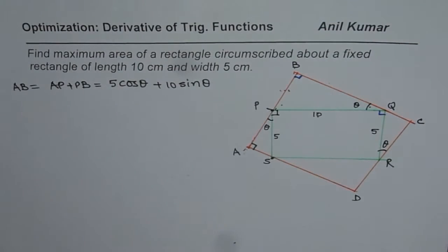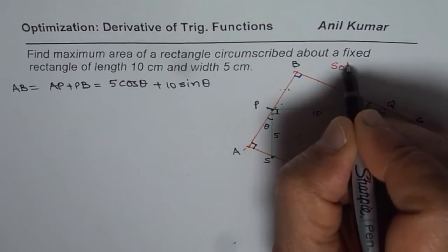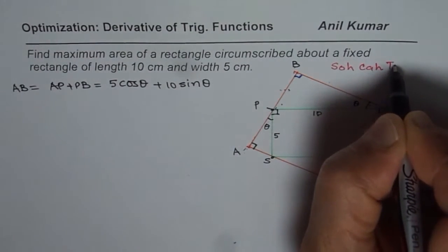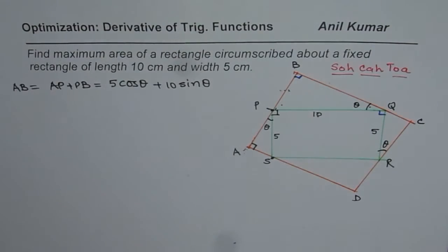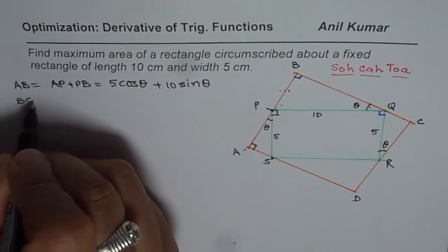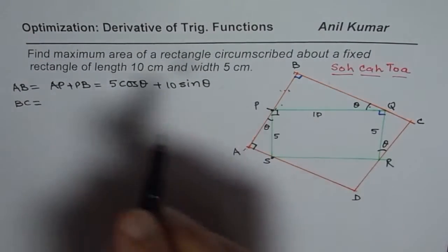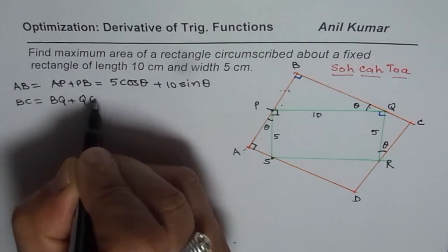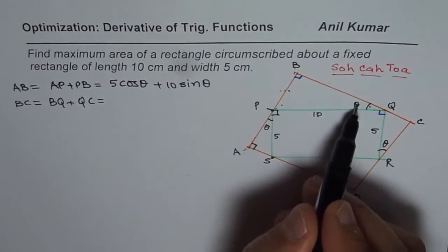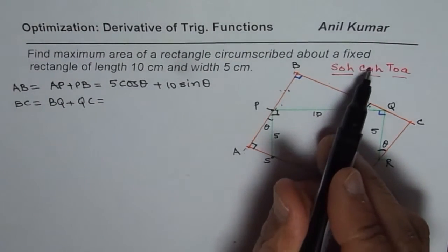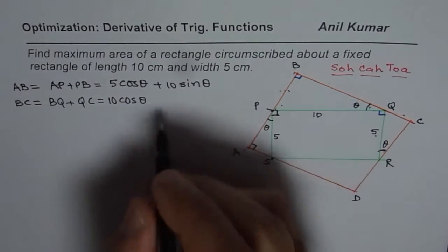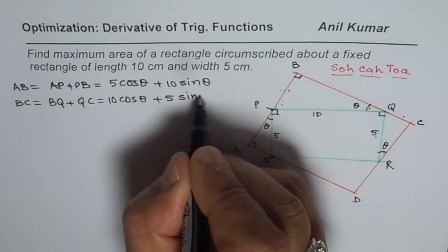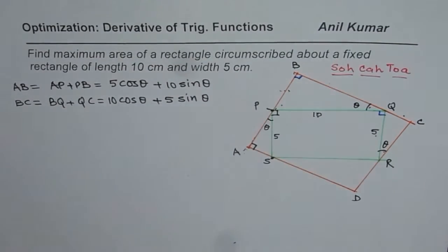In any right triangle, you can use SOH-CAH-TOA: sine is opposite over hypotenuse, cos is adjacent over hypotenuse, and tan is opposite over adjacent. We use SOH-CAH-TOA to find the relations in a right triangle. Let us also find side BC. BC equals BQ plus QC. BQ is the adjacent side with theta and hypotenuse 10, so we have 10 cos theta. QC is opposite to theta with hypotenuse 5, so it is 5 sin theta. This is the easiest way of getting the dimensions.